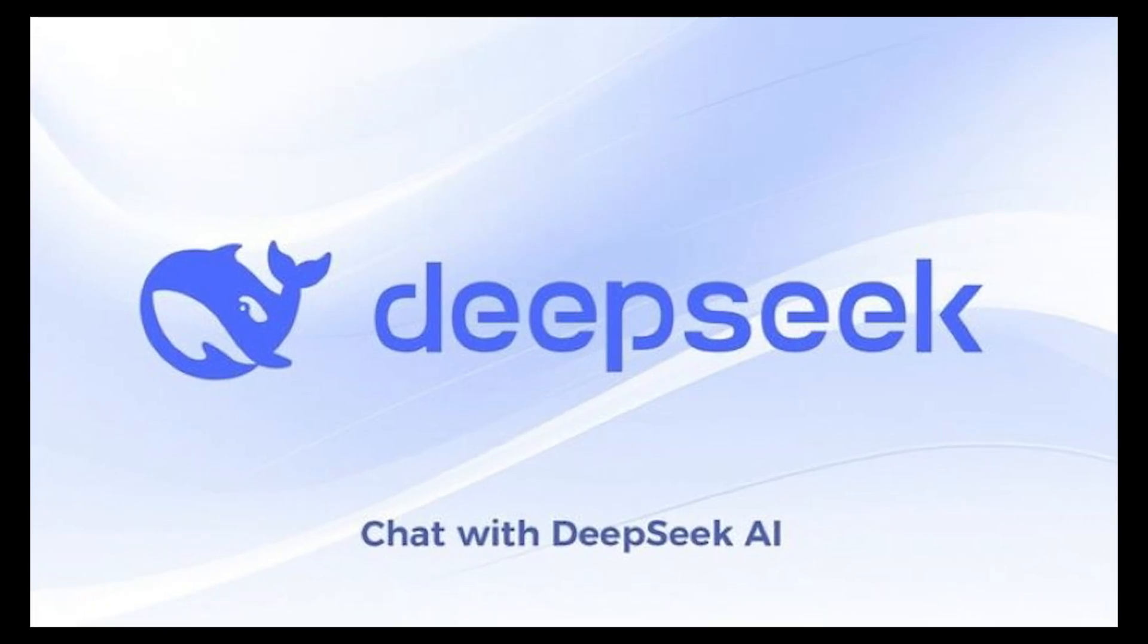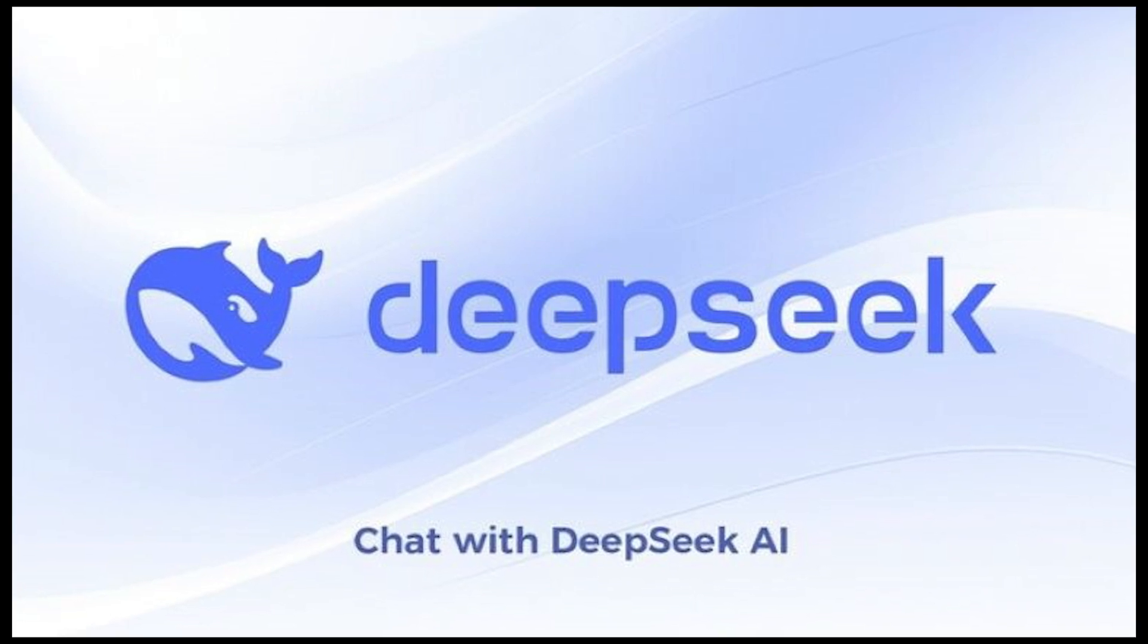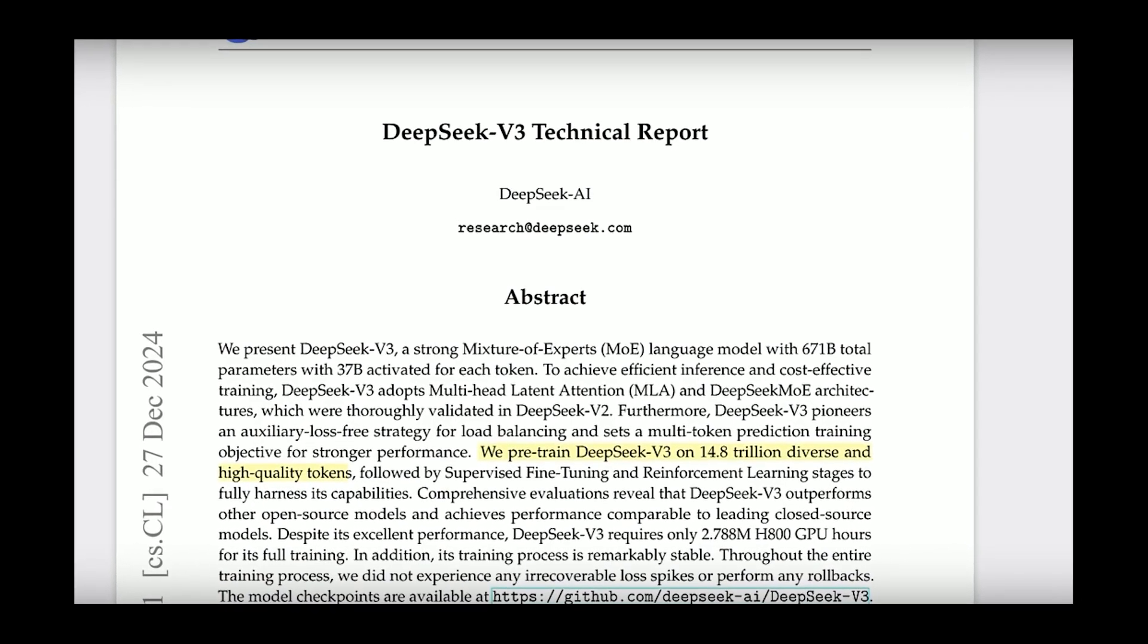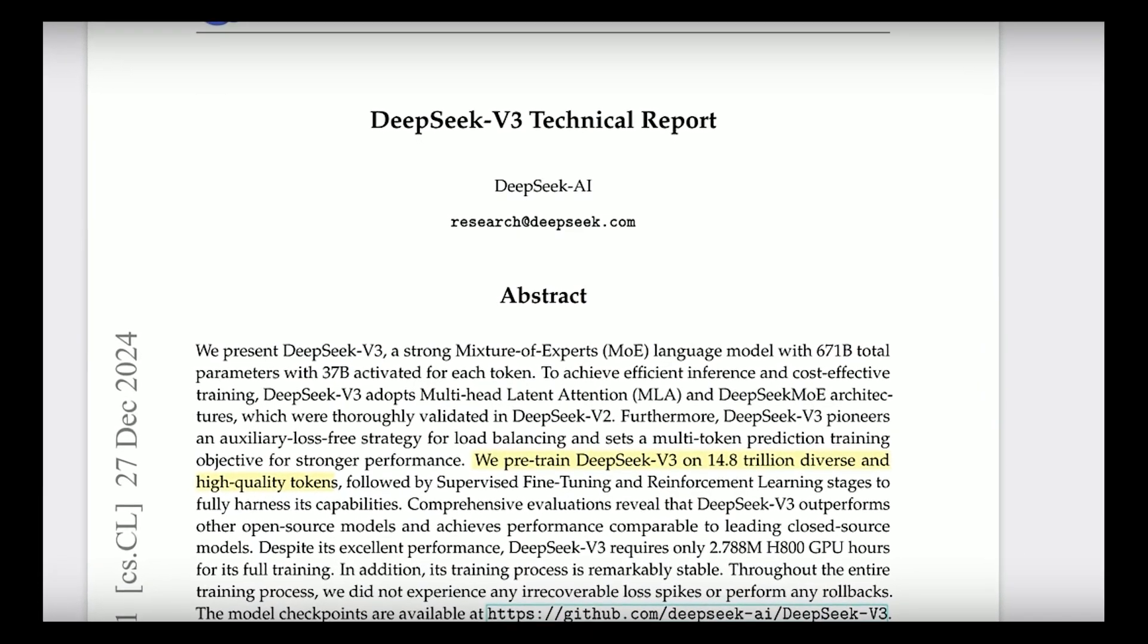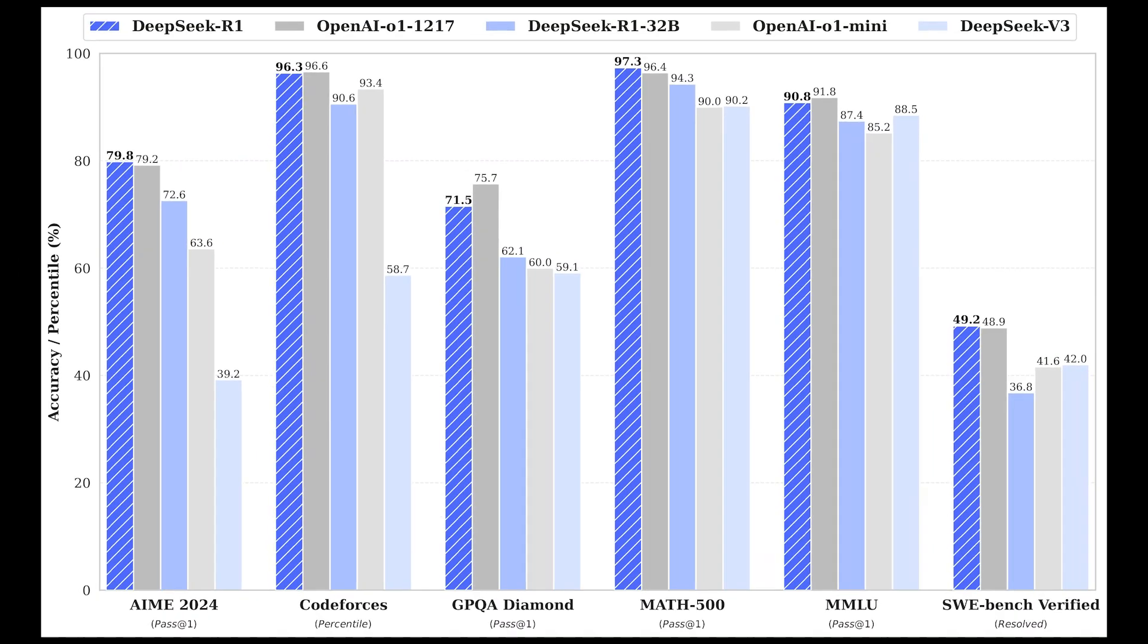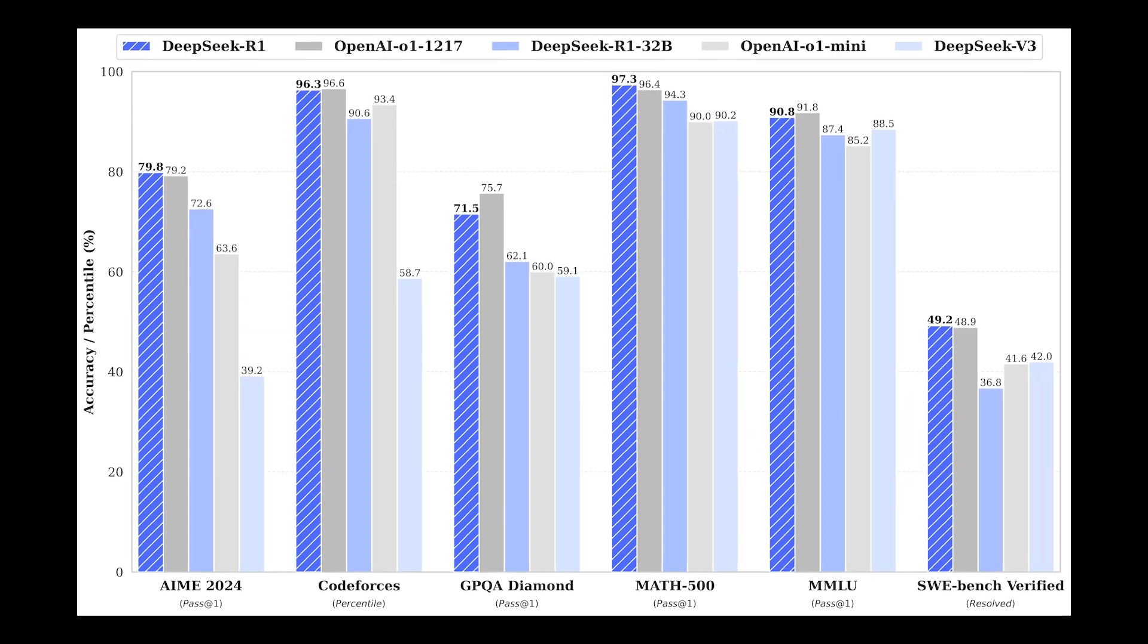Nonetheless, R1 is a pretty impressive model as a low-budget model from China and is a very important milestone for the open source community as it revealed much of the technology behind the thinking models. Plus, it is on par with O1 in various other benchmarks.